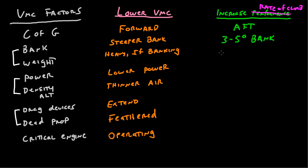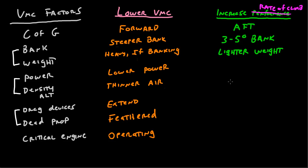Let's start out with weight. In order to increase aircraft performance on a single engine, you want a lighter weight. That one shouldn't take too much explanation. If you're banking, you want the airplane to be heavy in order to lower VMC. If all you care about is climbing, you want the airplane to be as light as possible. For the same amount of lift, the less weight you have, the more excess lift you'll have, and therefore the better you'll be able to climb.